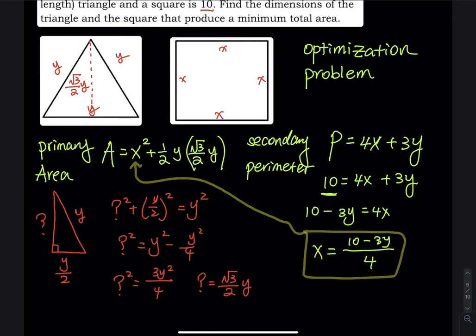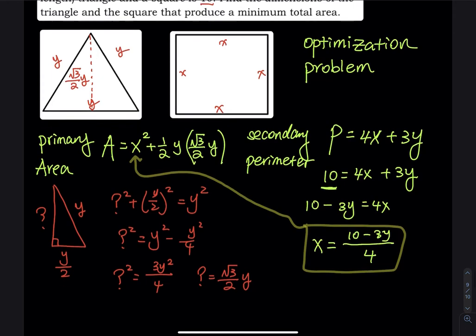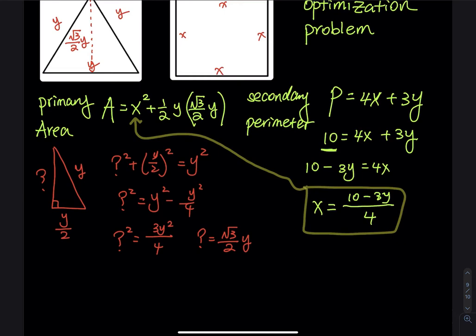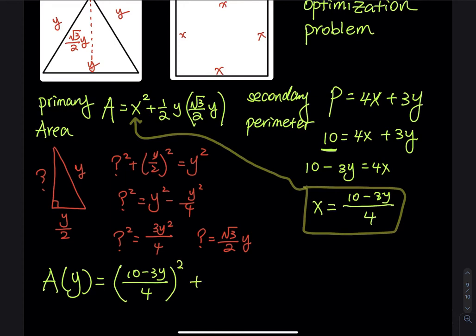The primary function becomes A(y) = [(10 − 3y)/4]² + (√3/4) · y². This is now a function of one independent variable, y, and we can take its derivative.